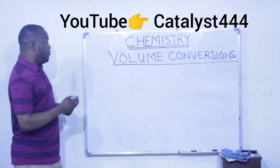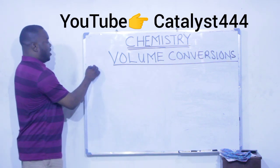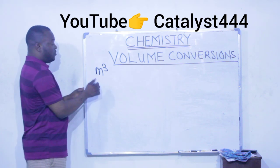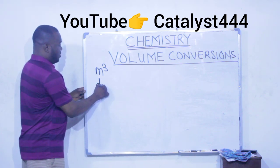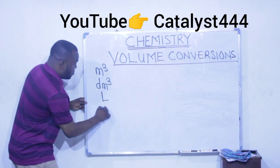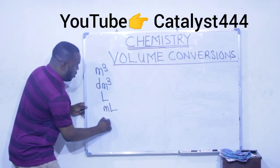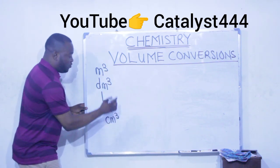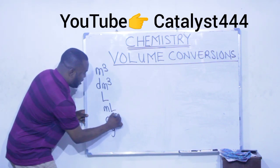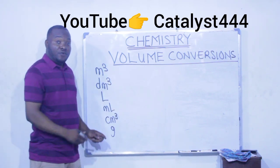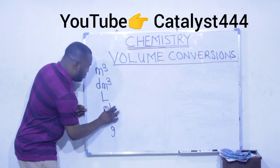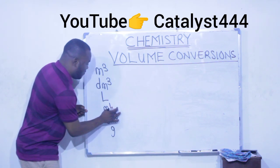The different units of volume we use in chemistry are meter cube, dm cube, liter, milliliter, centimeter cube, and gram units. Gram can also be used as a unit of volume in chemistry. These are the few units we will be using in this video.